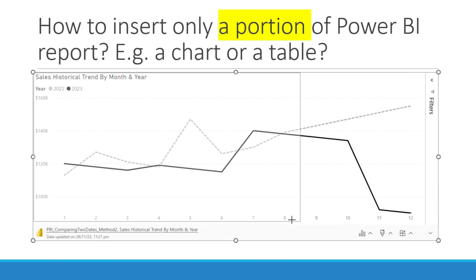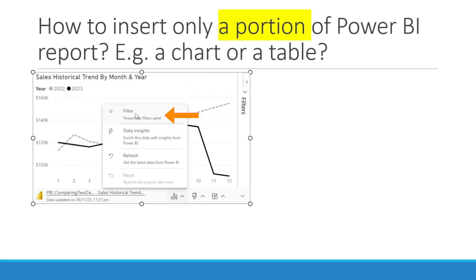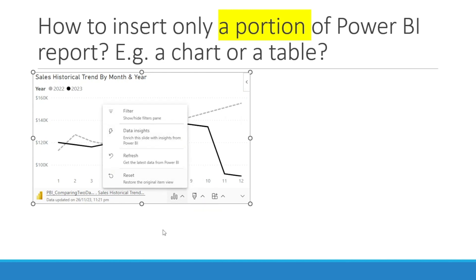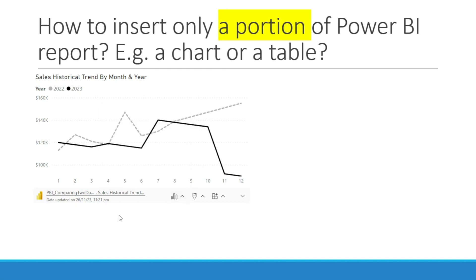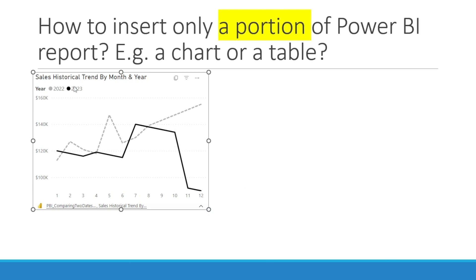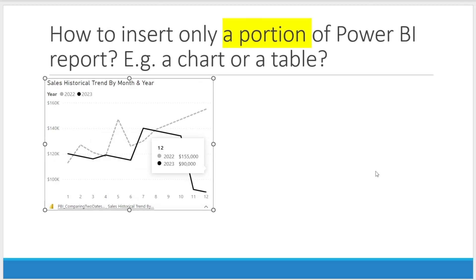Now, similar to before, we get something which is linked to Power BI. There is a Filter pane over there which you can hide by doing that — now it's hidden. The options you see are really similar to what I showed you earlier, and of course you can hide that as well. So in this page, we have this chart linked to Power BI. You can still see the tooltips — how cool is that?